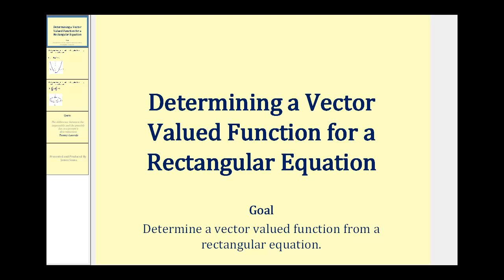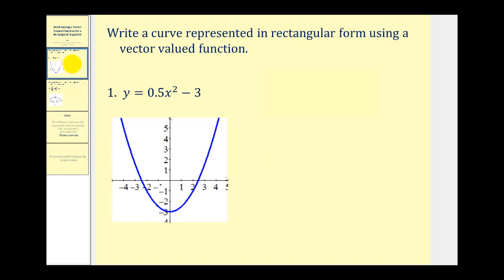Welcome to a video that will show how to determine a vector-valued function from a rectangular equation. For example, if we have the rectangular equation y equals 0.5x squared minus 3, as we see graphed here, we should be able to express this using a vector-valued function.